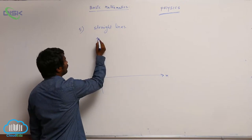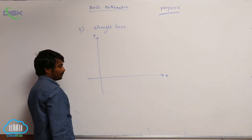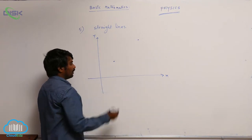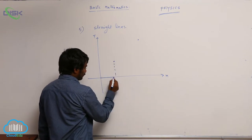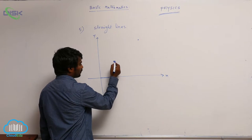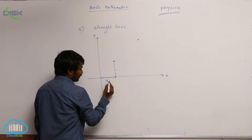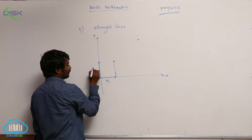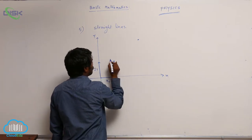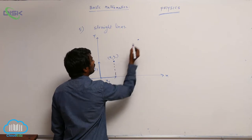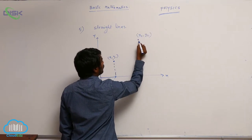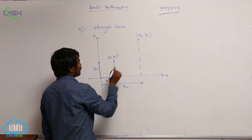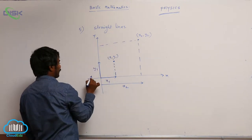The x-axis is positive, y-axis is positive. Let me take two points: this point is for x1, y1 and this point is for x2, y2. So this value is x1, this value is y1. This is for x1, y1; this is for x2, y2. So x2 coordinate means from here to here, and y2 means from here to here.